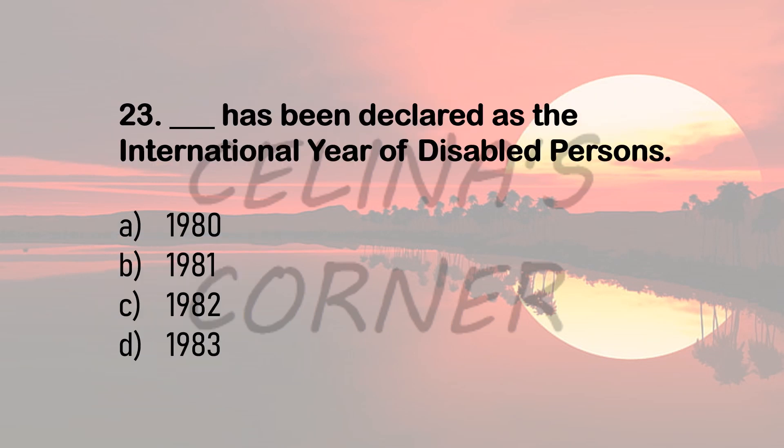Question 23. Dash has been declared as the International Year of Disabled Persons — option 1980, 1981, 1982, or 1983? The correct answer is option B, 1981. This declaration was made by the United Nations. In response to this declaration, India developed a national plan to provide services for people with disabilities.